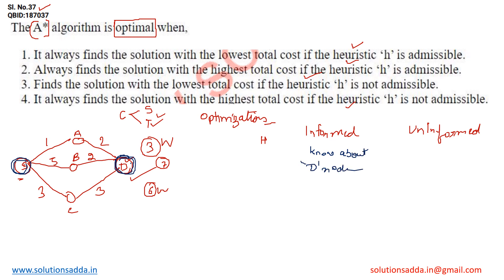In uninformed search, I don't know about the destination node. Searching techniques like BFS or DFS come under uninformed search, where I don't know exactly which node I am searching for. Now let's talk about informed search — in informed search, heuristic search is used, where I already know the destination and I am using a heuristic function.